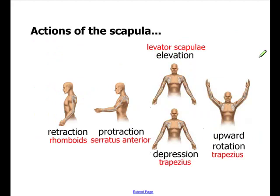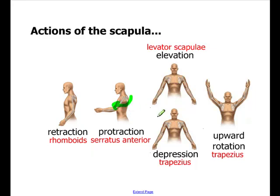Moving on to the actions of these muscles: first, retraction — pulling your shoulder blades back. The prime mover for retraction is the rhomboids, major and minor, with the rhomboid major being the primary mover because it is much larger. Protraction is the opposite action, rolling your shoulders forward, and the muscle responsible for that is the serratus anterior.